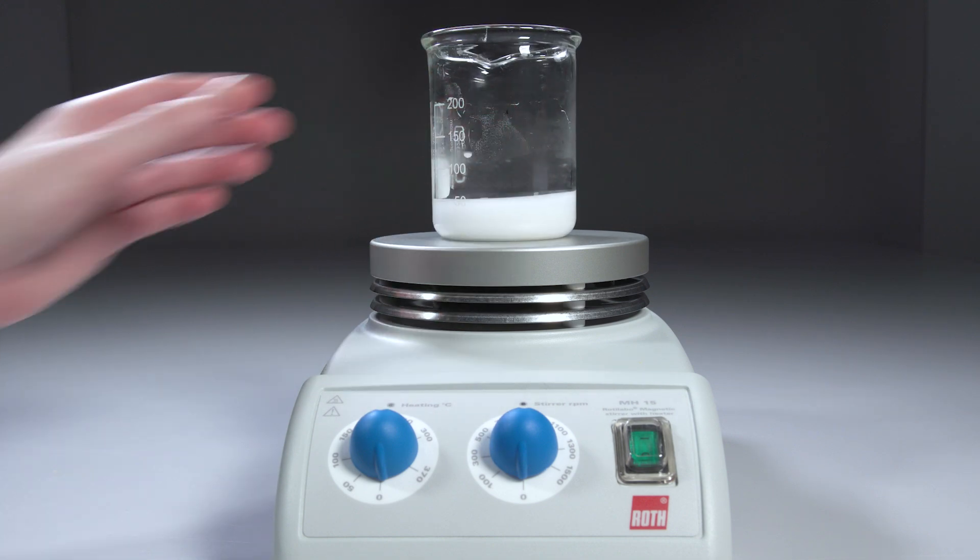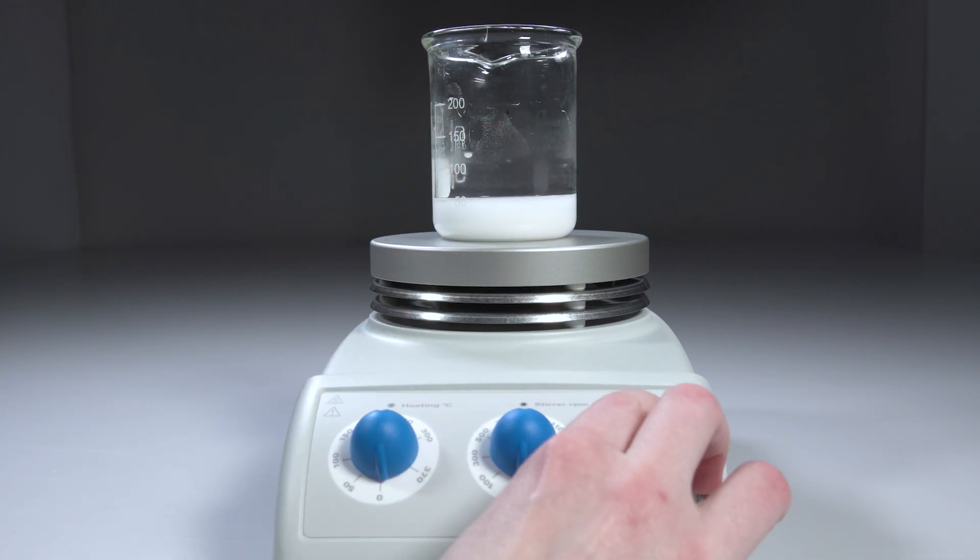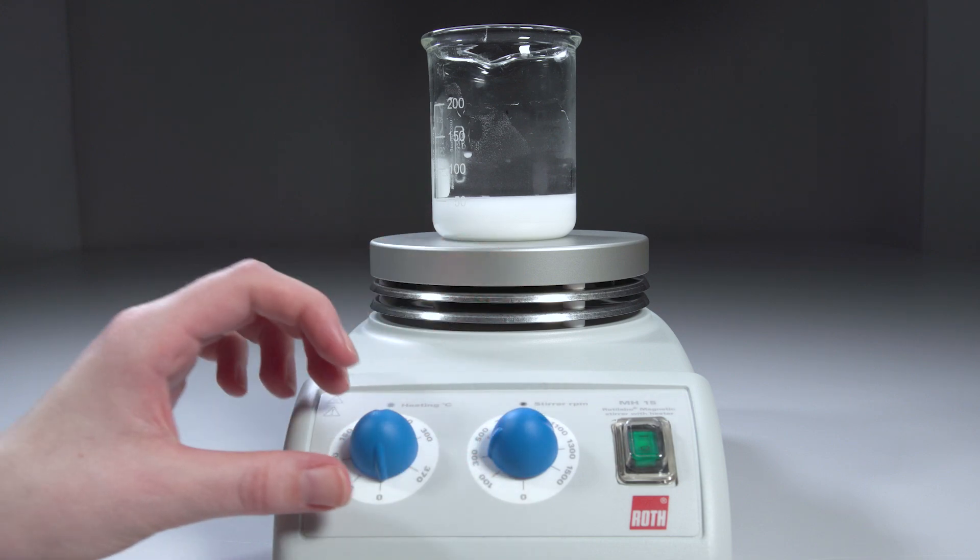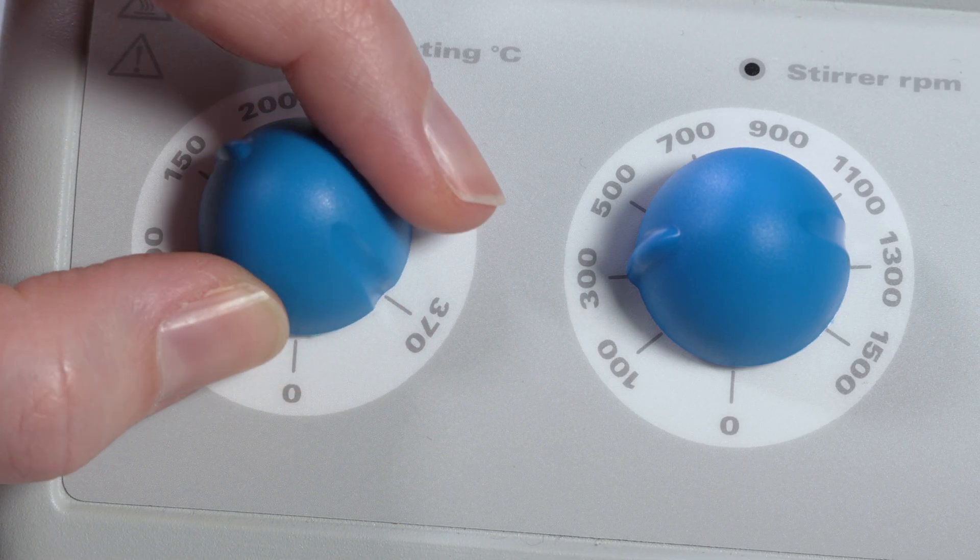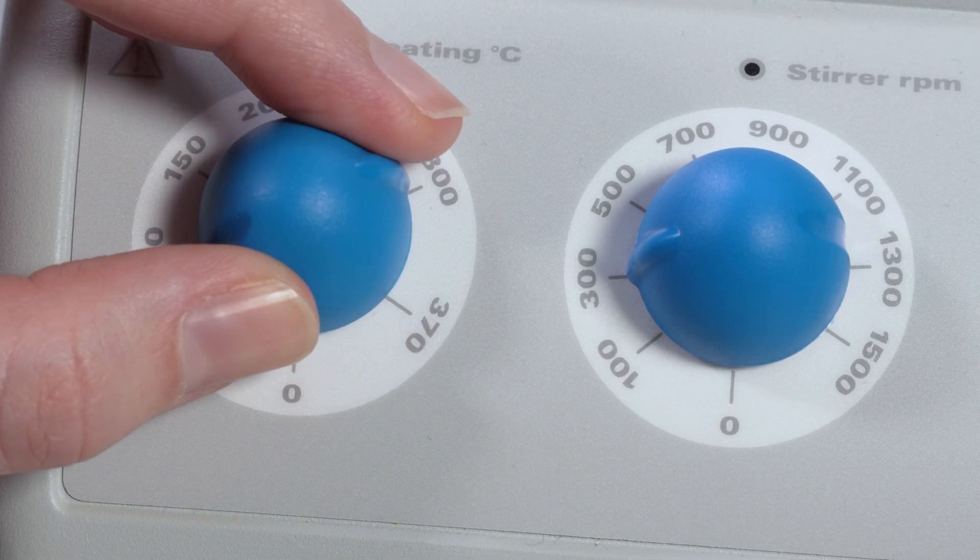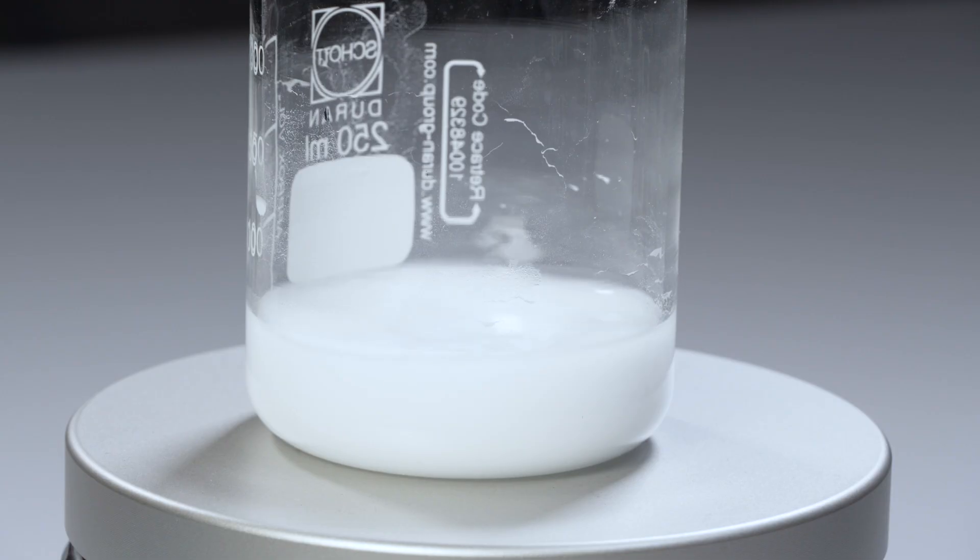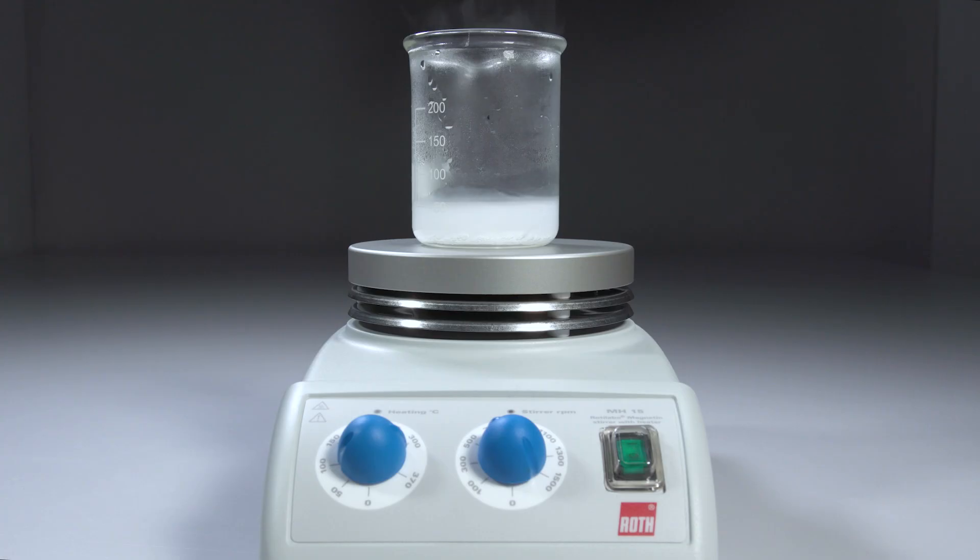The starch suspension is placed on the magnetic stirrer. The magnetic stirrer and hot plate are turned on. During the gelatinization process, the viscosity increases. It may be necessary to increase the speed to ensure good mixing. With this method, only smaller quantities of paste can be produced.